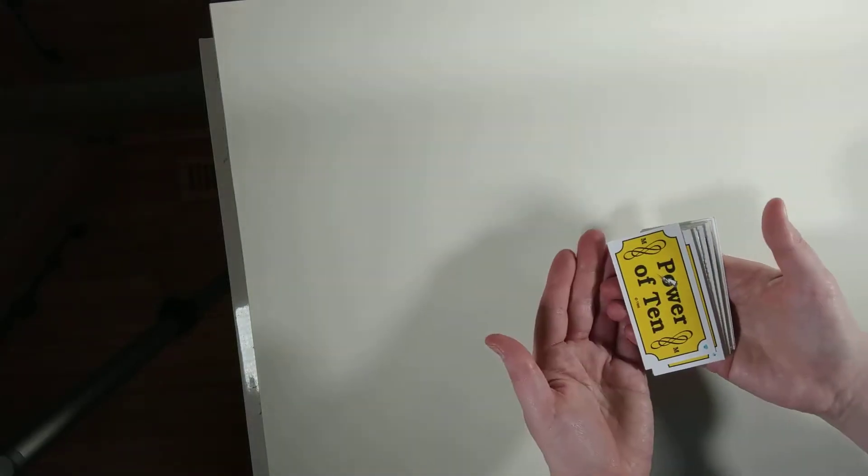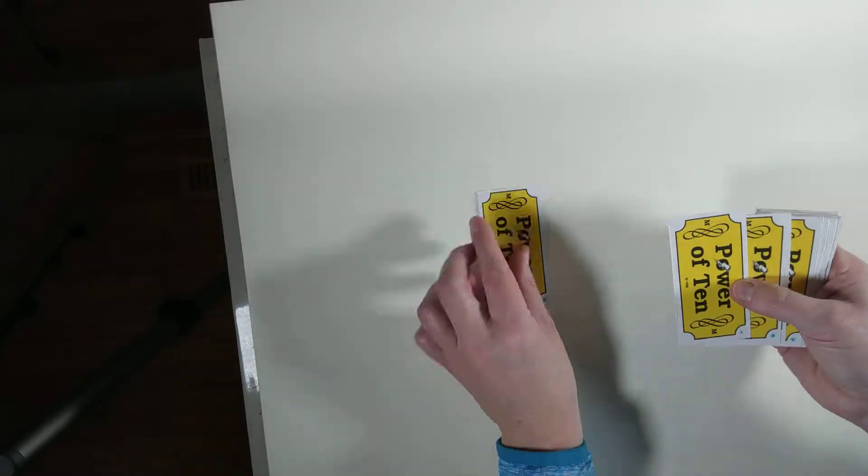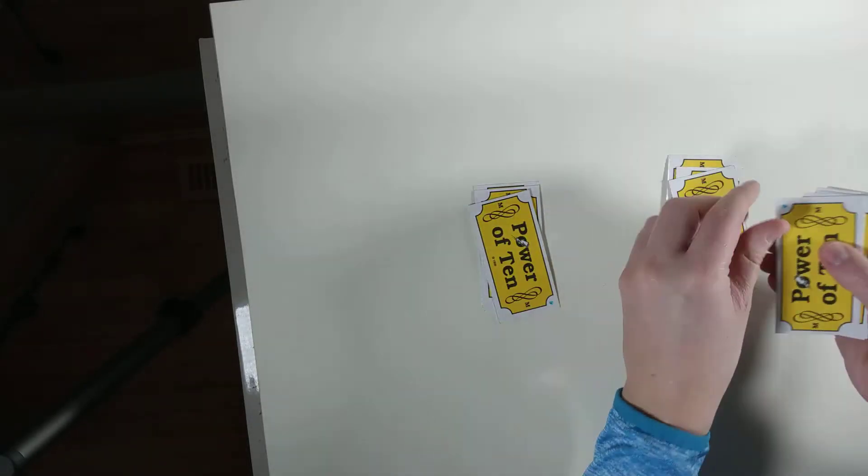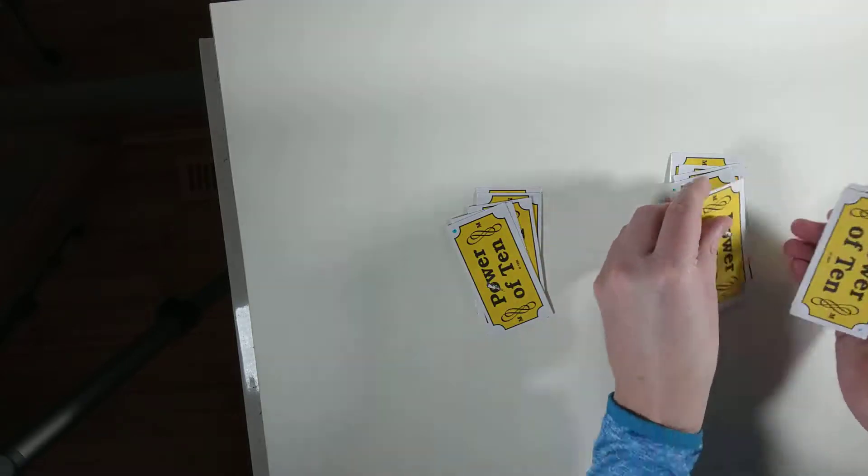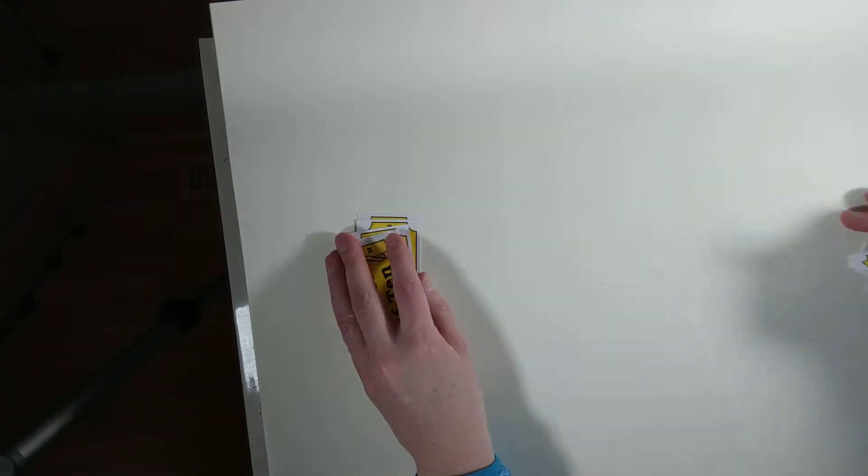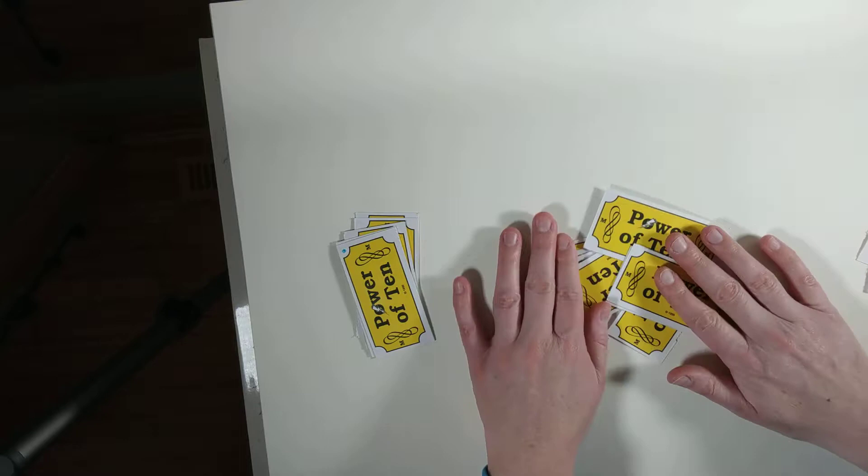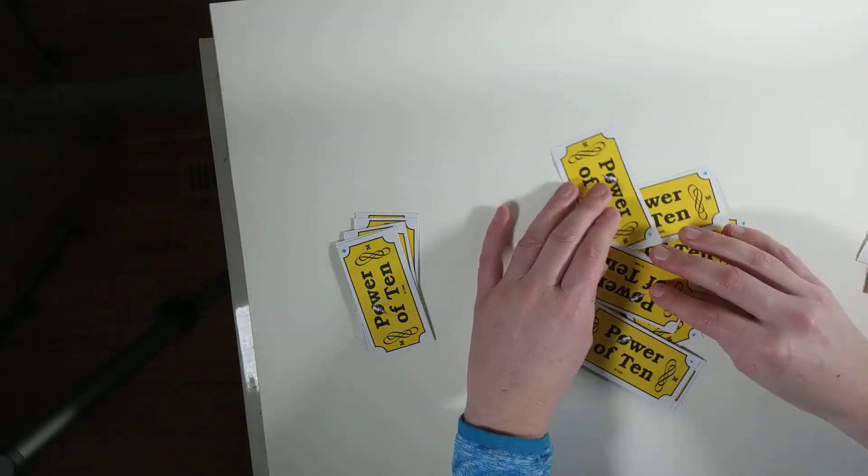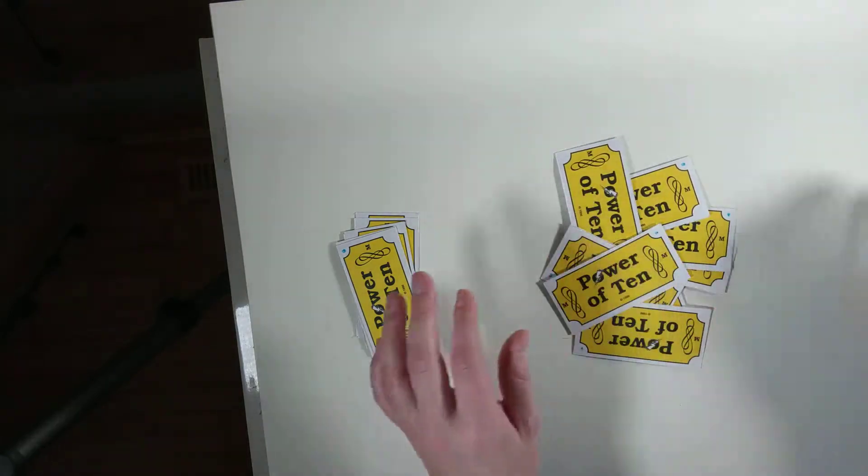So the game I'm going to show you is Fish with Power of Ten cards. Basically there will be two, three, four, maybe five people playing. Hand out five cards, and then you're going to make a pond with the remaining cards like that.